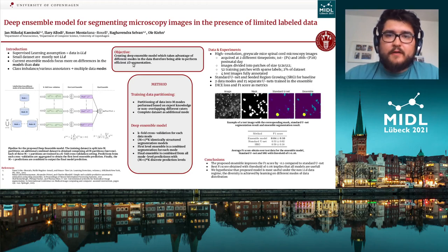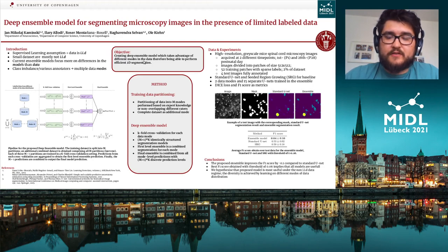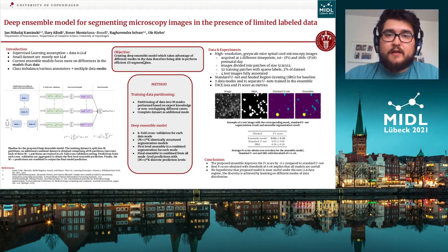For our experiment, we had high-resolution grayscale mice spinal cord microscopy images acquired at two different time points — on the first and on the 28th postnatal day. The images were divided into patches of size 512 by 512. Out of those patches, we had 52 training ones with sparse annotations, which contributed to 2% of the whole dataset. For the purpose of testing, we selected four test images which were fully annotated.